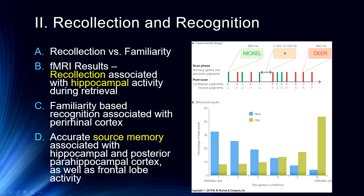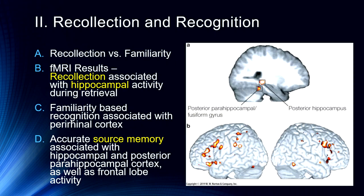In a source memory study, items were presented in red versus green. Accurate source memory occurs when participants correctly identify which color an item was presented in. We see hippocampal and posterior parahippocampal cortex as well as frontal lobe activity associated with accurate source memory. While the textbook calls these recollection responses, this is technically a source judgment — which is probably where the frontal lobe activity comes from. The posterior parahippocampal cortex, fusiform gyrus, and posterior hippocampus are all clearly involved in this kind of source memory response.